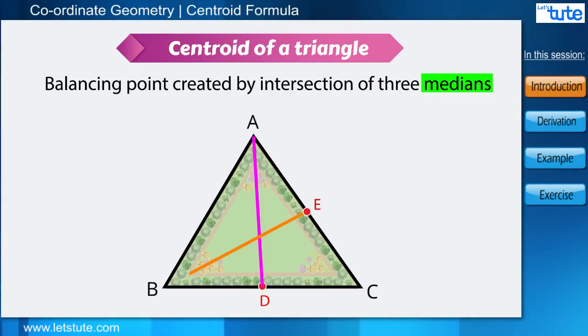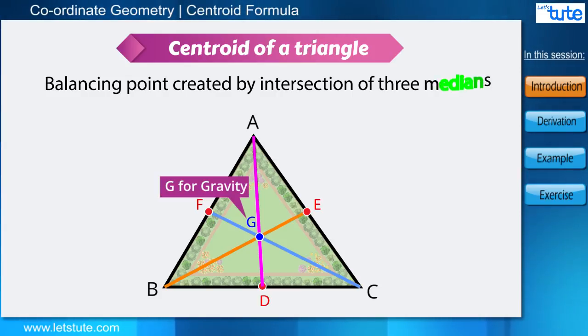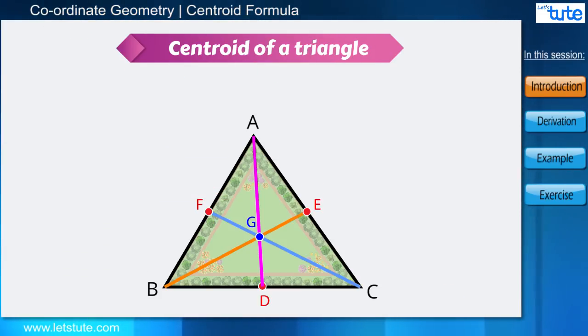Now we can see that there are three medians which are intersecting at a common point, and this intersection is our centroid, which is usually denoted by point G. Now can you tell me anything more by observing this diagram? Well, we can see that the medians have divided the triangle into six smaller triangles.